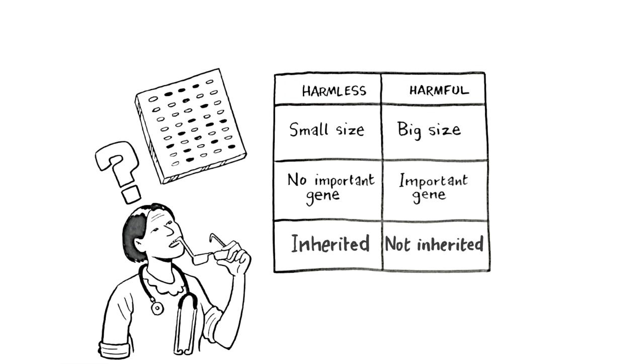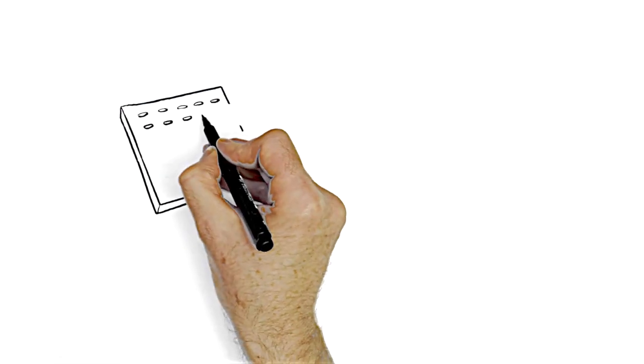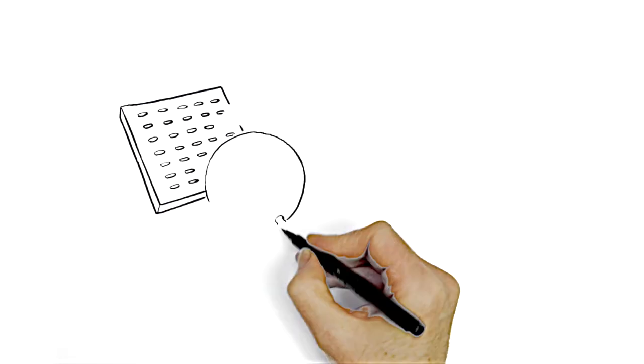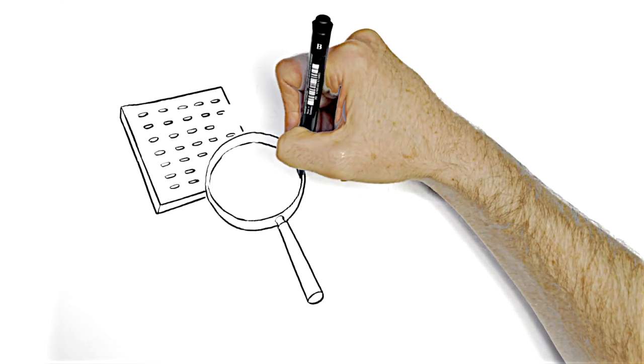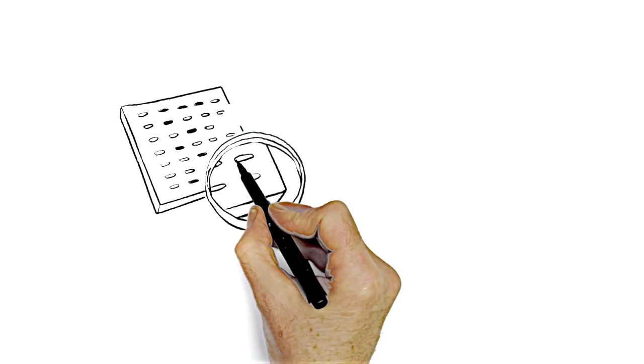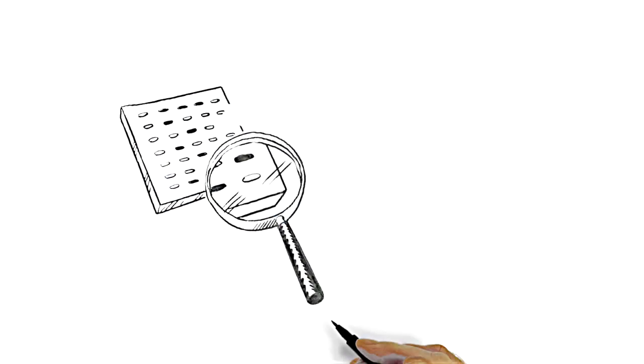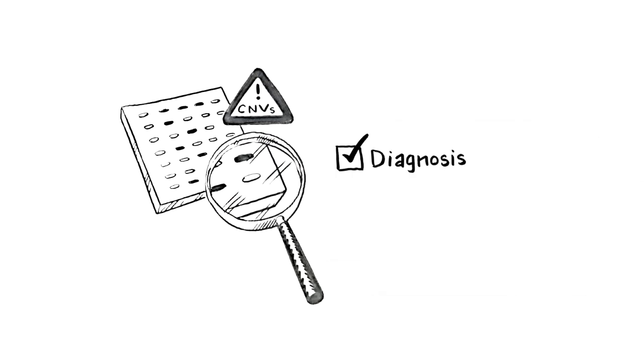Each case has to be assessed individually. So each genetic test result showing a CNV requires careful consideration. When we're trying to determine the cause of a child's problem, sometimes the CNV explains the diagnosis, sometimes it doesn't, and sometimes it's a maybe.